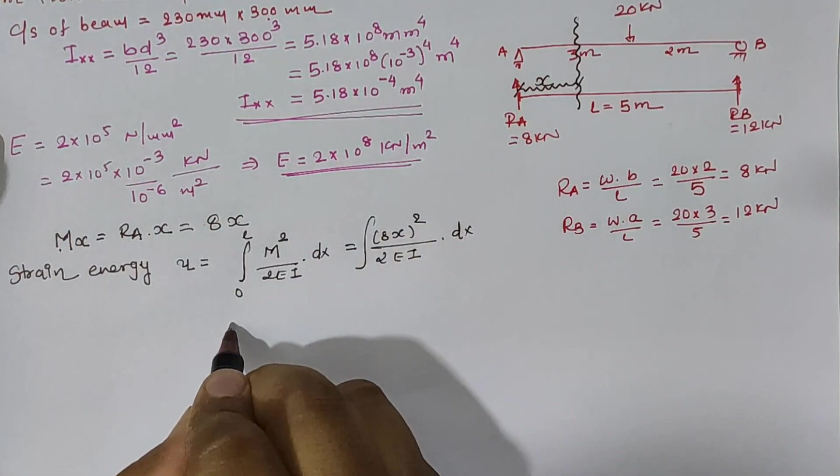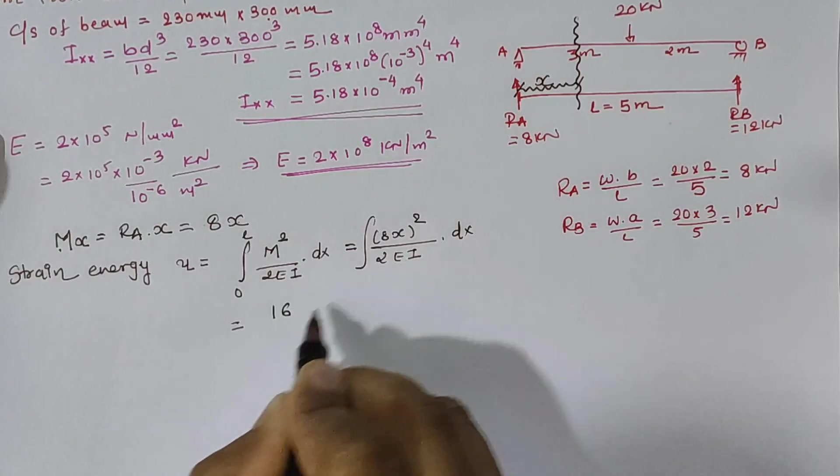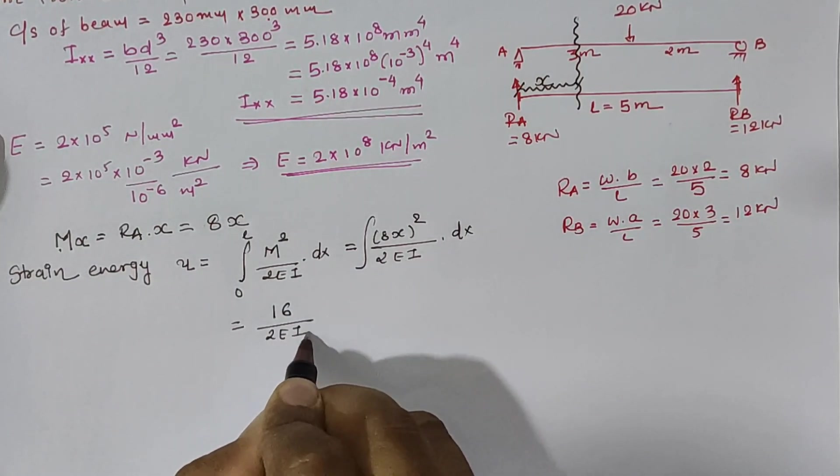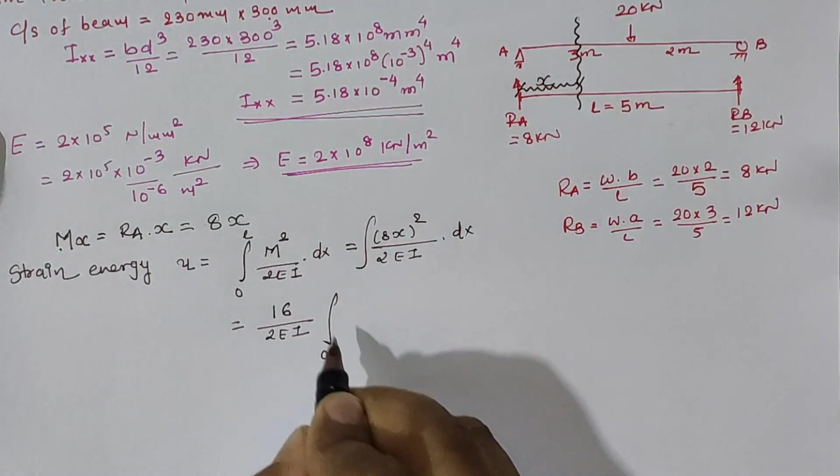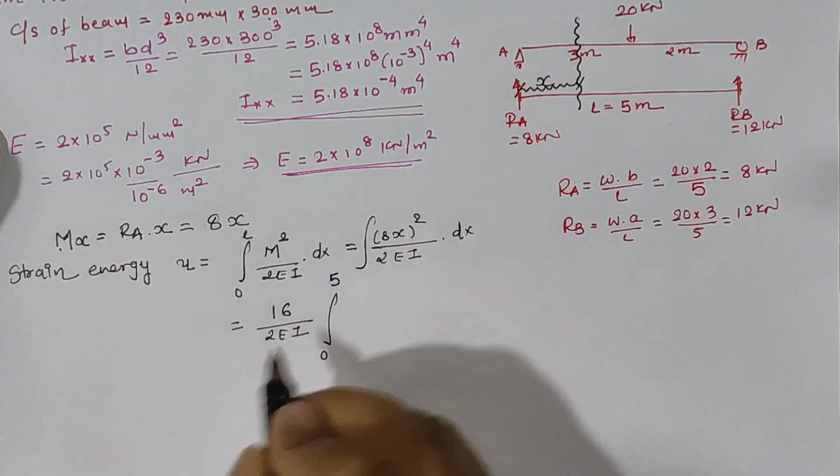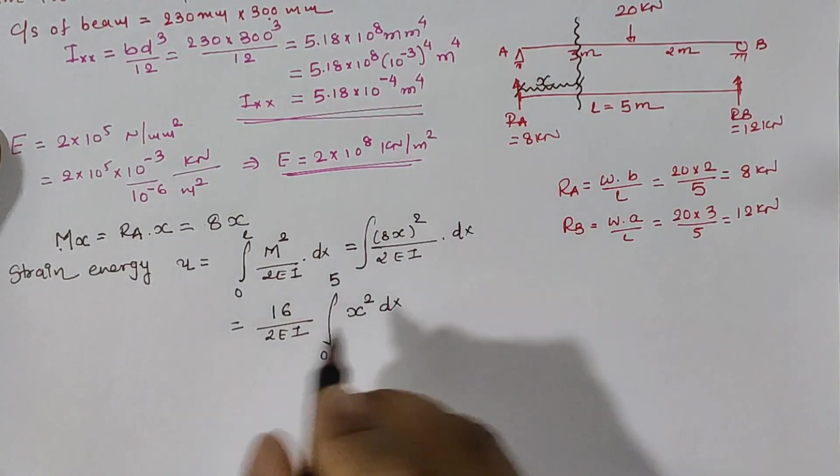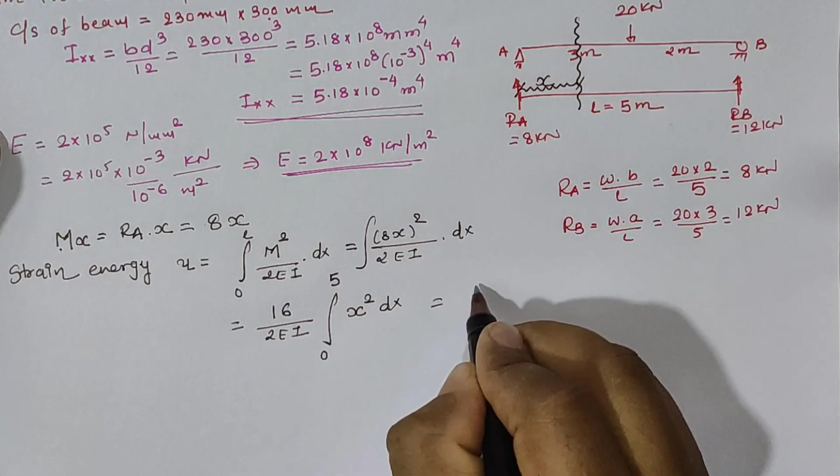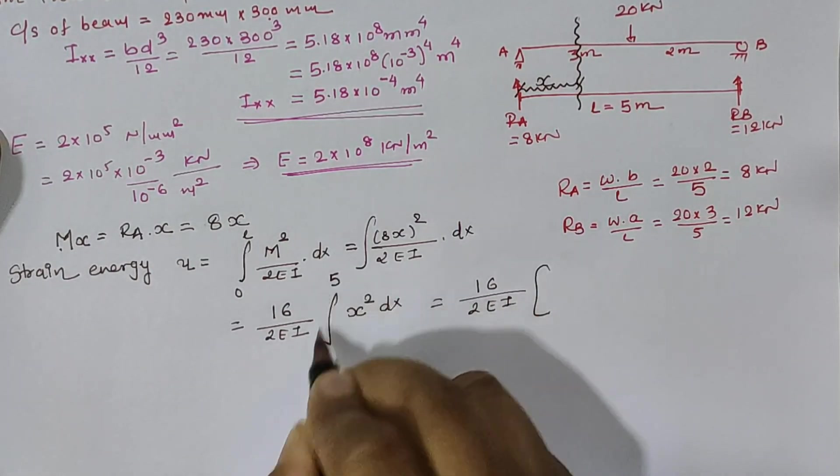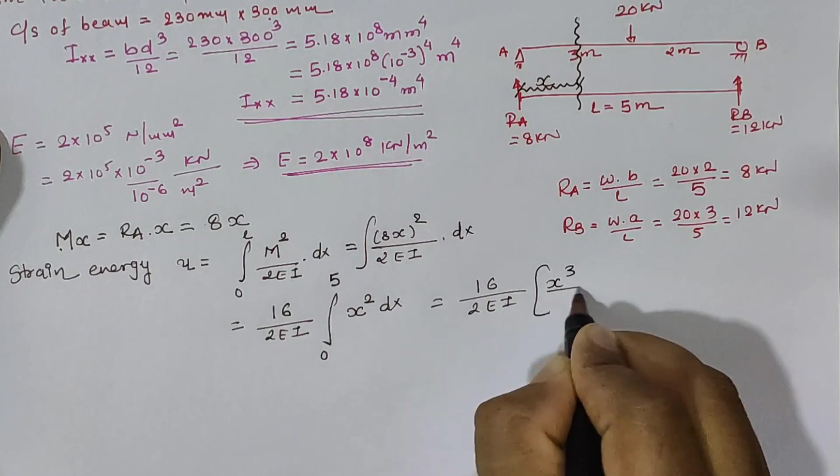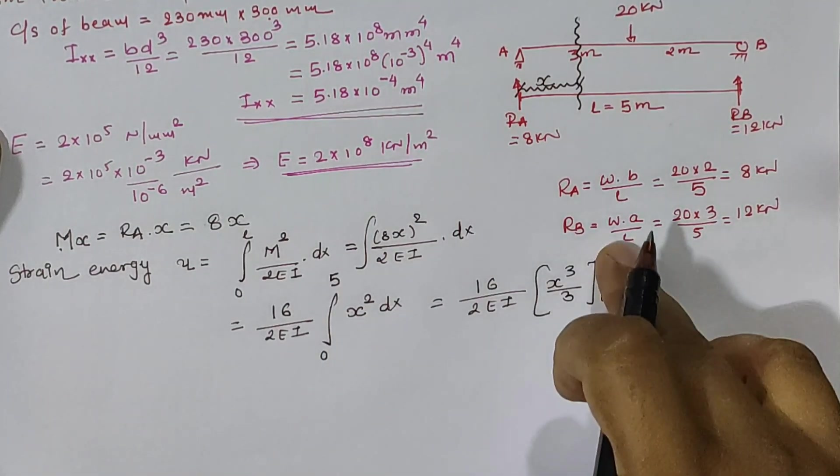Now, solving this term we will have 8² as 16 divided by 2EI as a constant value. Now, proportionality limit is from 0 to 5. Hence, remaining term is x² dx.